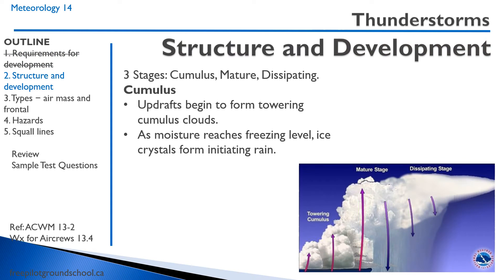There are three stages in the development of a thunderstorm. The first is the cumulus, the second is the mature, and the third is dissipating. In the cumulus stage, we have updrafts that begin and form towering cumulus clouds. That means the air is unstable — the lapse rate is greater than the dry adiabatic lapse rate.